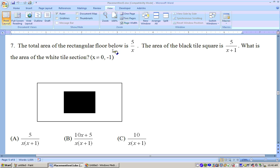Problem number seven says the total area of the rectangular floor below is 5 over x, and the area of the black area is 5 over x plus 1. What is the area of the white area?